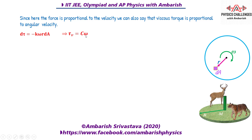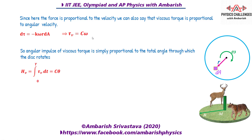This is very clear from the figure. The angular impulse of the viscous torque is simply proportional to the total angle through which the disc rotates, because the torque is proportional to omega, and integrating omega dt gives the total angle through which the disc turns. So we can say that the angular impulse H-viscous equals c times theta, where theta is the total angle through which the disc has turned.